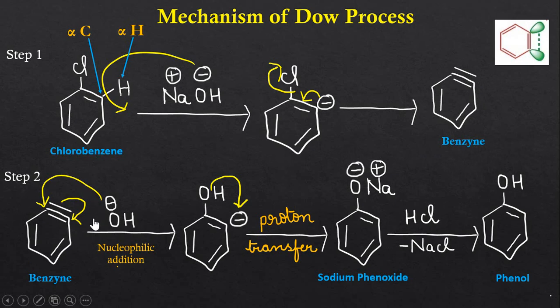In this benzyne intermediate, nucleophilic addition reaction takes place. The pi bond formed outside the ring will break and these pi electrons move towards one carbon atom. This carbon gets negative charge and the other carbon becomes positively charged. OH minus is a nucleophile and it attacks on this positively charged electrophilic site.